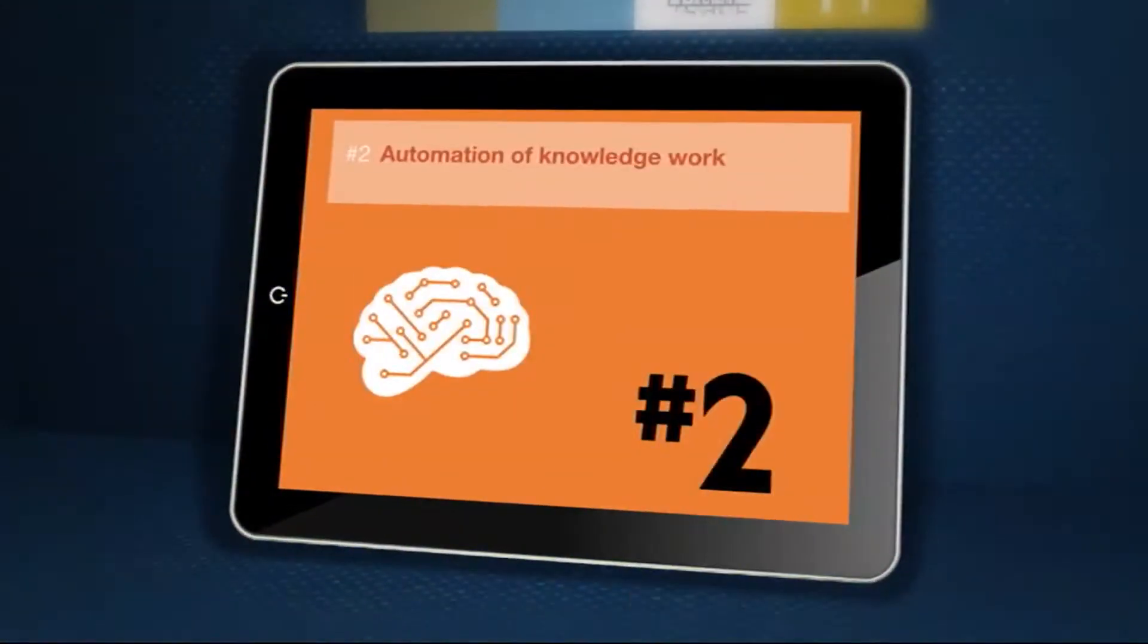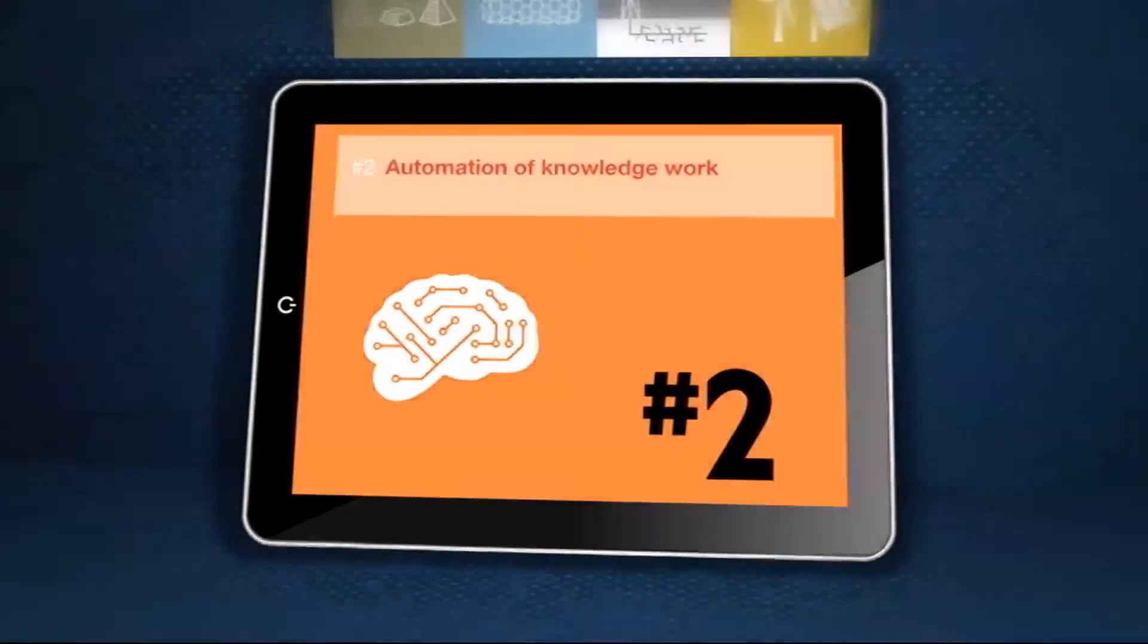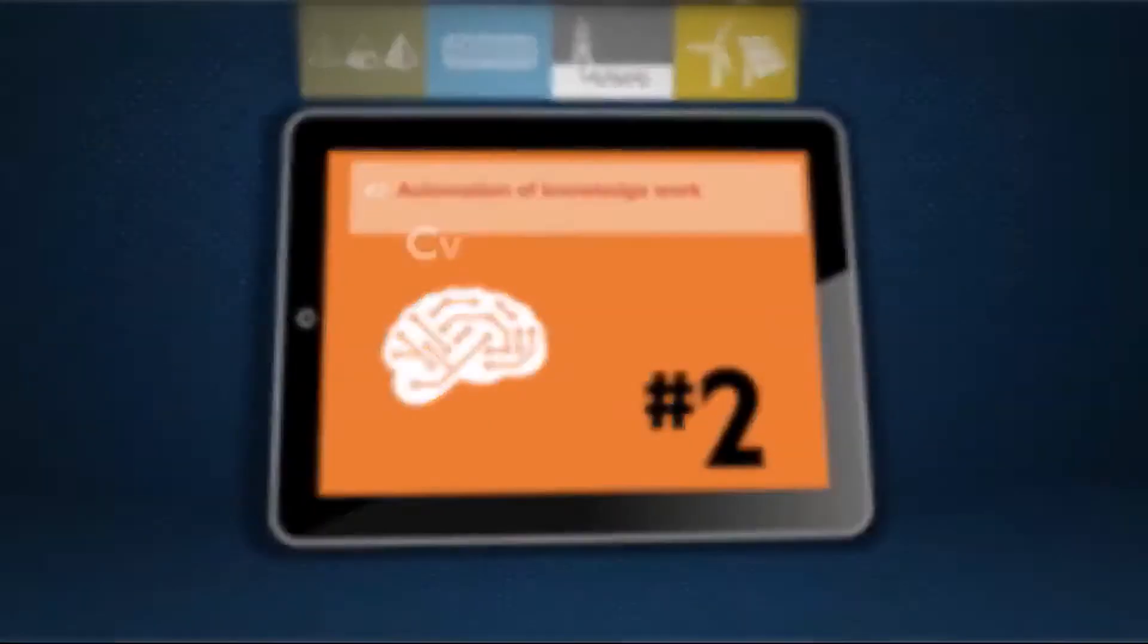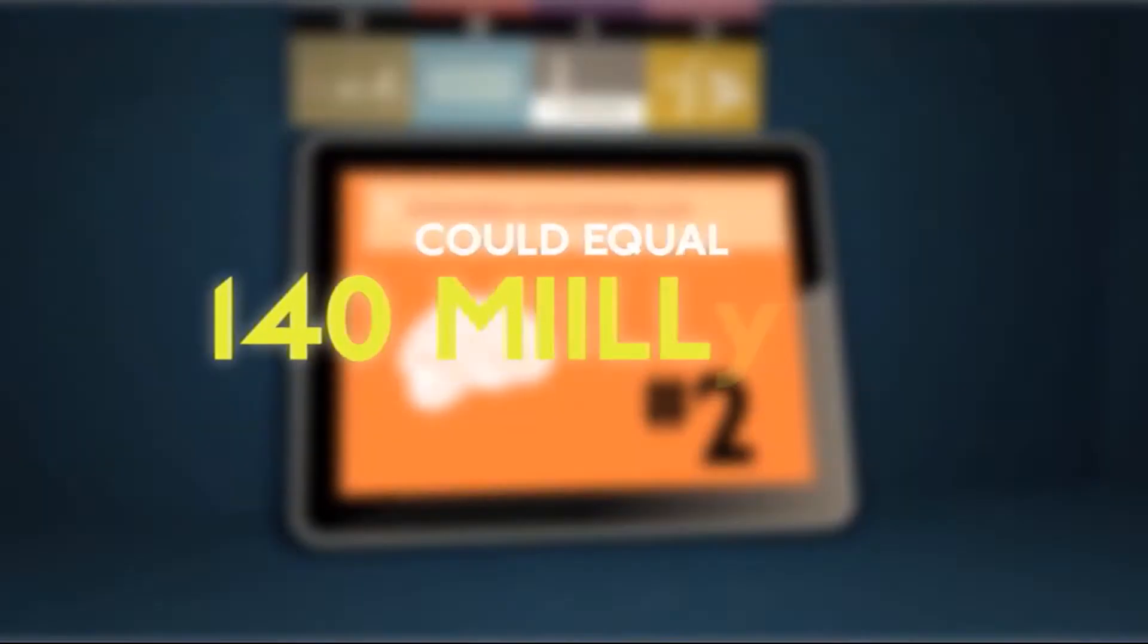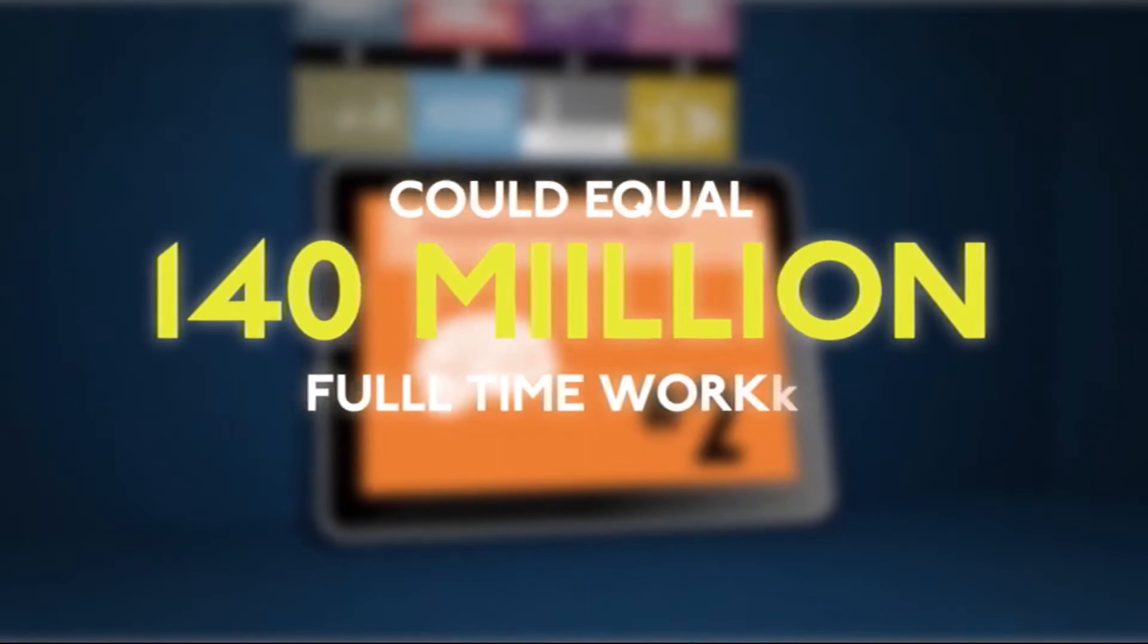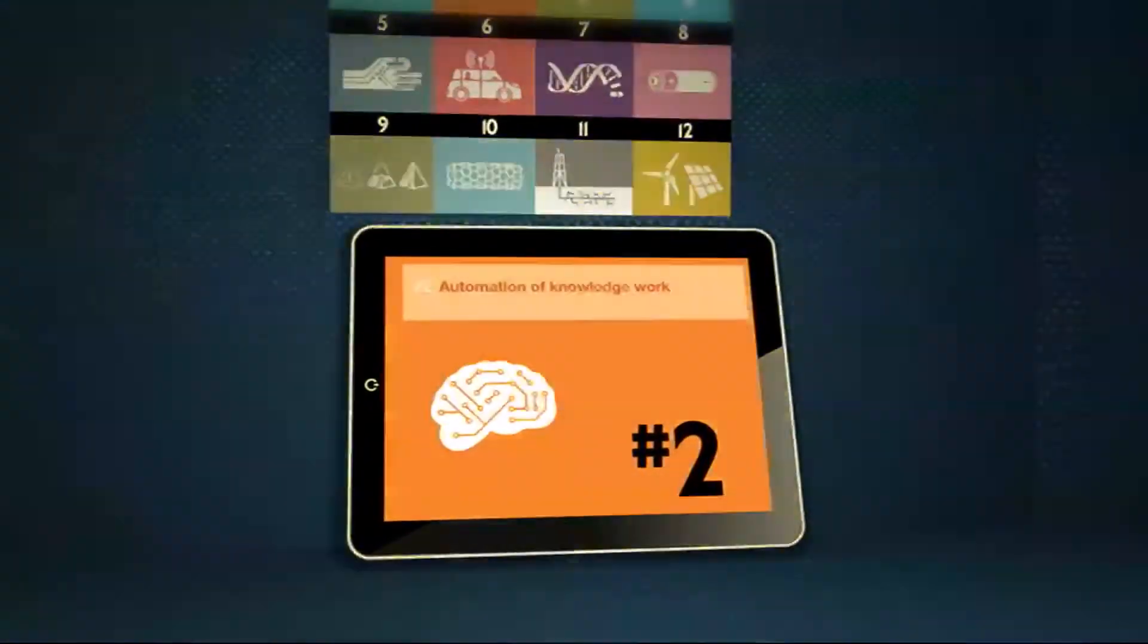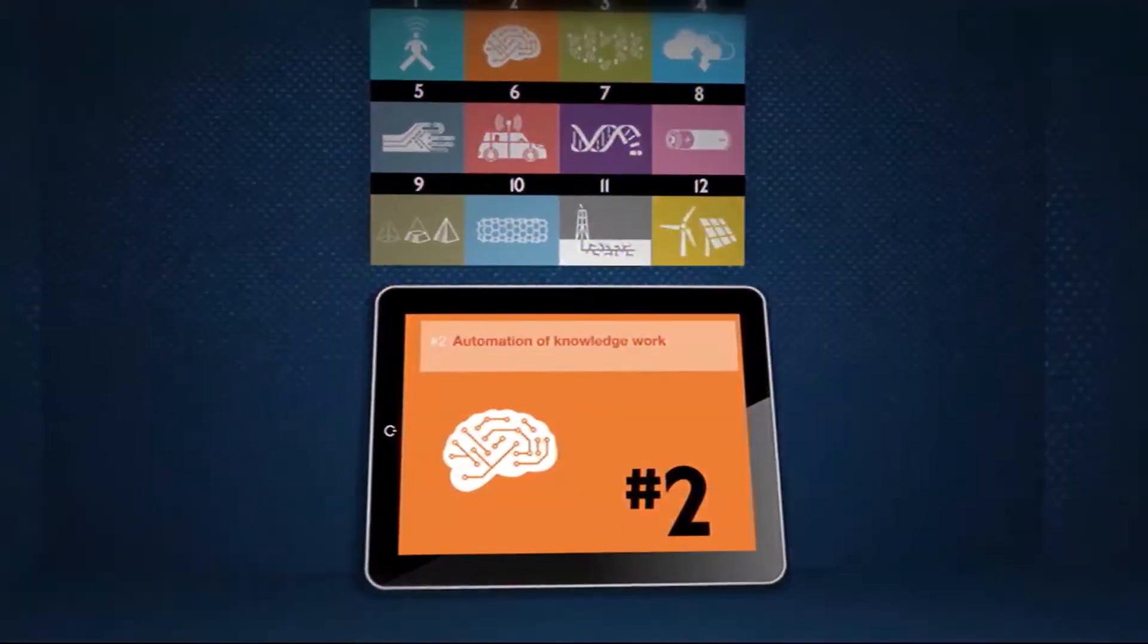At two, the automation of knowledge work like artificial intelligence that's used in research or the finance sector could equal the output of 140 million full-time workers. But the most disruptive technology is something we already have.